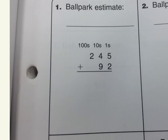Now let's take a look at homelink. This is homelink 2.6, and the first thing again is you're going to make a ballpark estimate. And here we're using larger numbers now, so I can do an estimate to the nearest hundred if you prefer. I'll round 245 to 200, 92 is close to 90, so my estimate is 290.